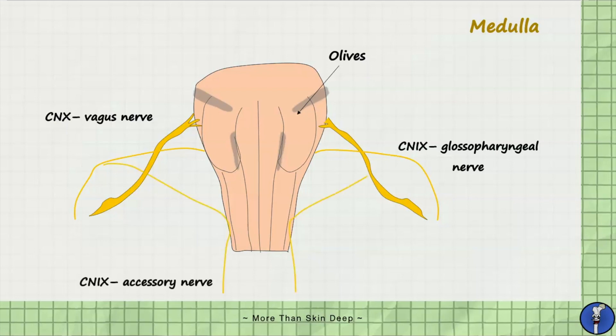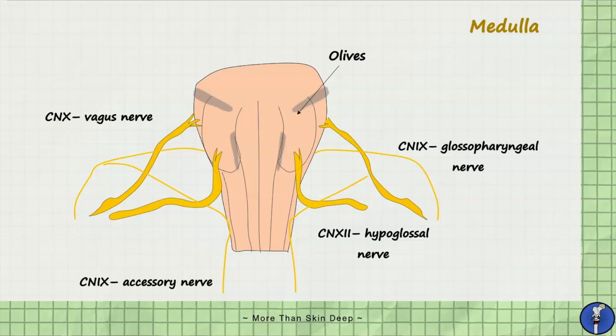The eleventh cranial nerve — the accessory nerve — has a spinal and cranial component. It's the cranial component which originates from the lateral and inferior aspect of the medulla, just posterior to the olives. Lastly, the twelfth cranial nerve — the hypoglossal nerve — extends from the medulla just anterior to the olive, at a junction called the ventrolateral sulcus.